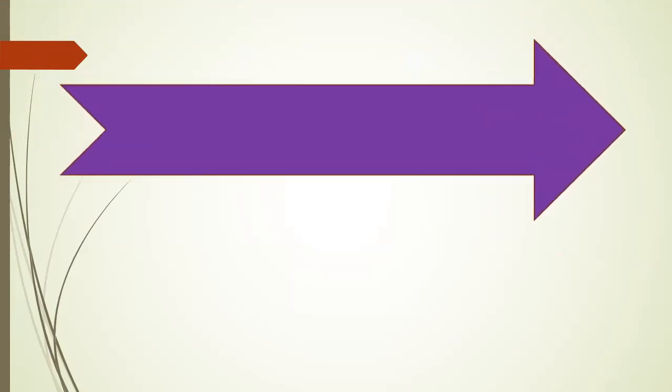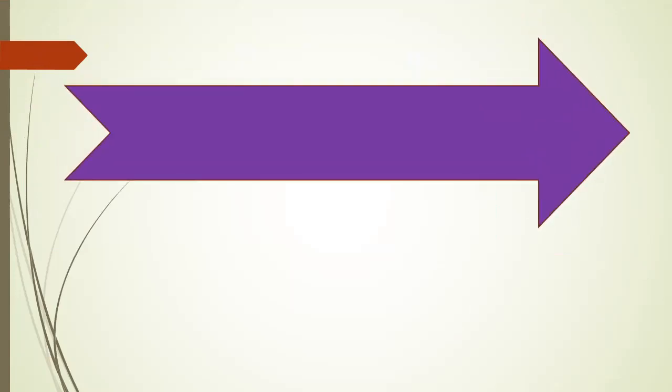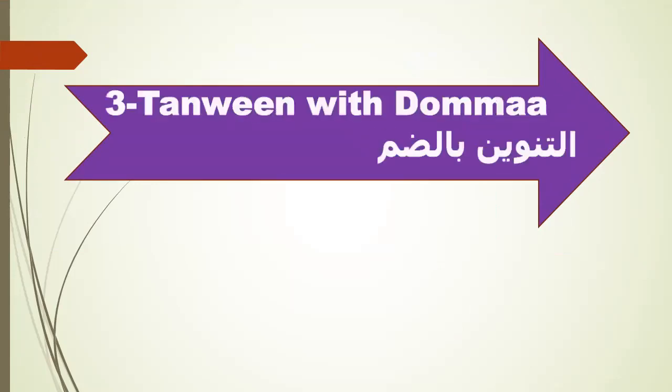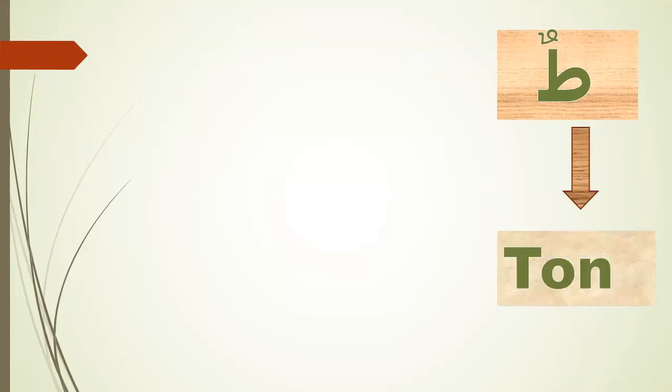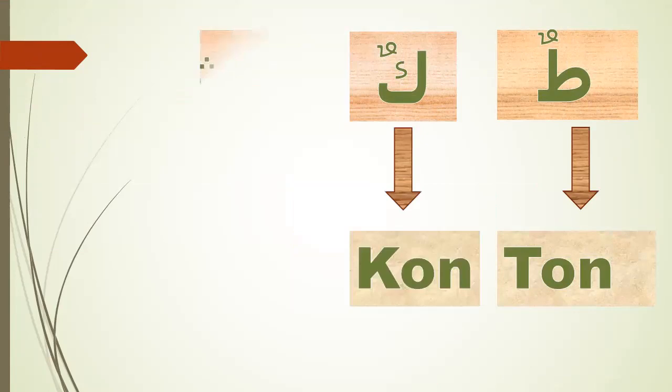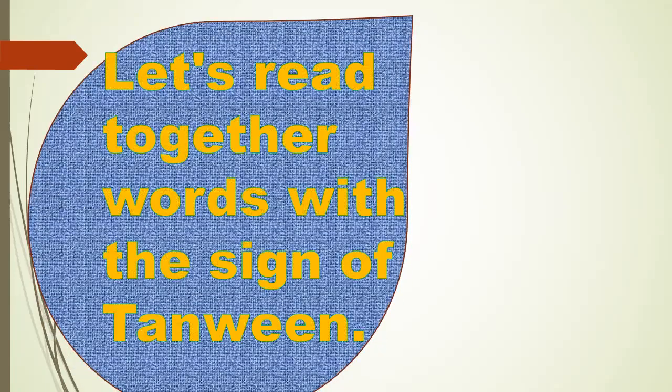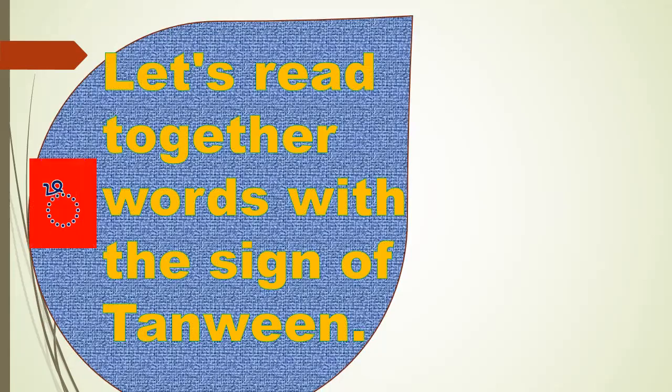Let's go to the last part and the third type of tanween, it's tanween with dhamma. Please repeat after me. Let's read together words with the sign of tanween with dhamma, please repeat after me.